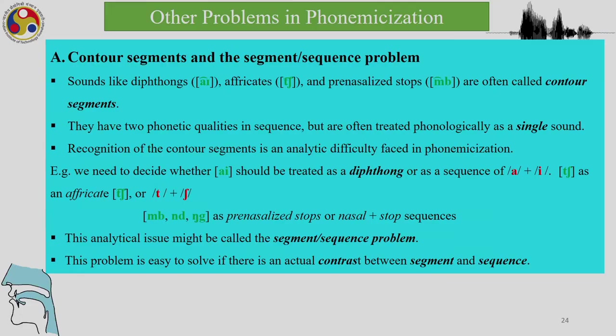Contour segments and the segment sequence problem: sounds like diphthongs, affricates, and pre-nasalized stops are often called contour segments. This is another problem in phonemicization — double sounds or contour segments have two phonetic qualities in sequence but are often treated phonologically as a single sound. The recognition of contour segments is an analytic difficulty in phonemicization. We need to decide whether the vowel 'ai' should be treated as a diphthong or as a sequence of two segments, 'cha' as an affricate or as a stop plus fricative, and pre-nasalized stops as nasal plus stop sequences.